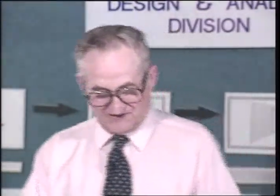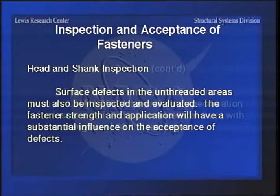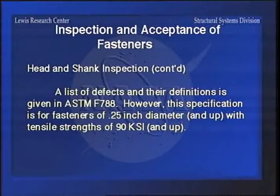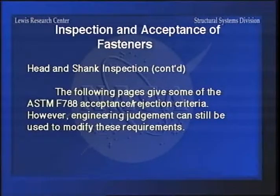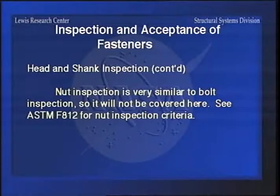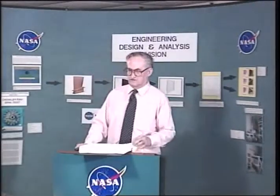Some of the people who did the testing were surprised that it was that good. Now moving to the other parts of the fastener - the head and shank inspection. One of the places where you can really get into trouble with a fastener is having any kind of a defect in the fillet radius under the head, because since that is one of your highest loaded areas, any kind of a crack there usually will propagate to cause failure. A list of defects and their definitions are given in ASTM F788 for fasteners, and nut inspection is covered in ASTM F812.